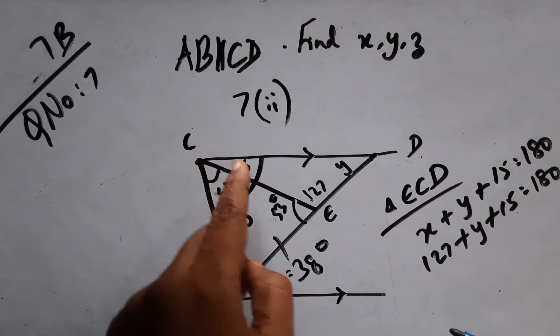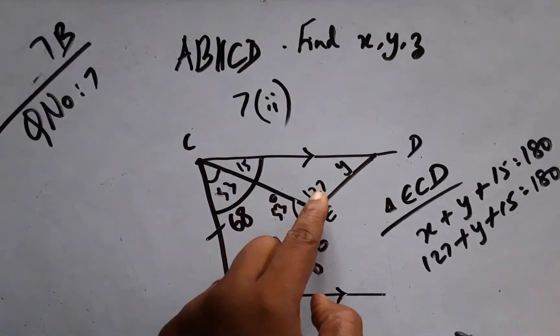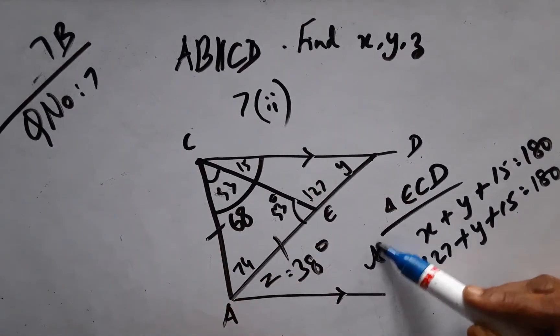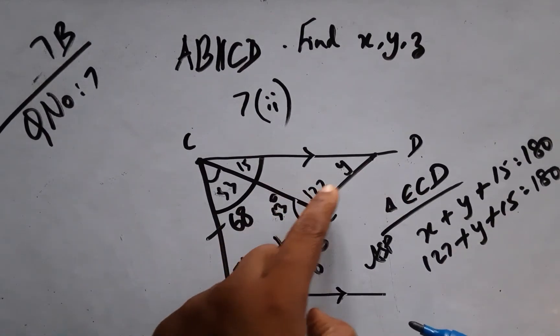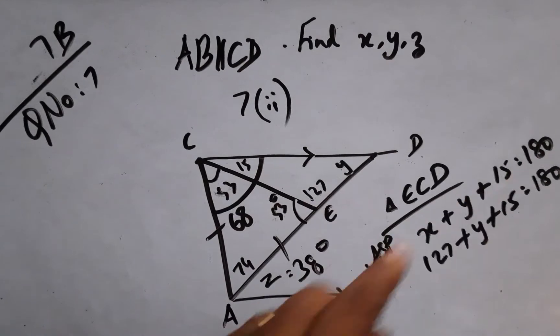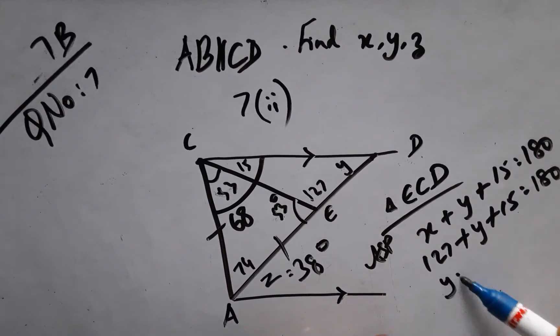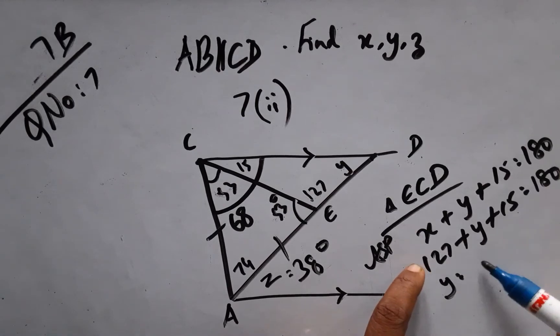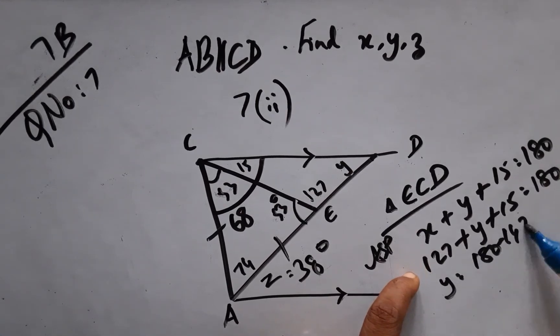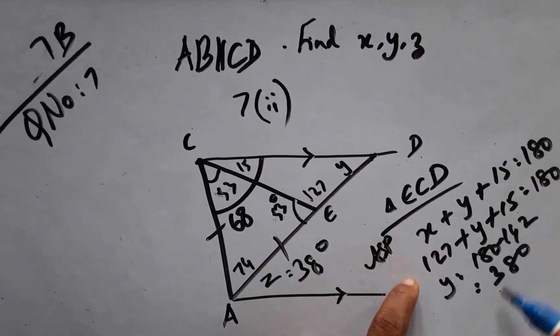Now, all said, finally for triangle ECD, if I apply my angle sum property, X plus Y plus 15 gives 180. X has been recently discovered. Now Y value will be 142, 180 minus 142 comes to 38 degrees.